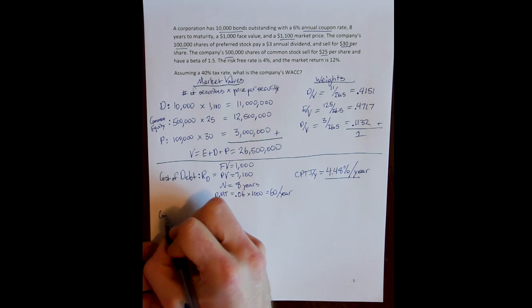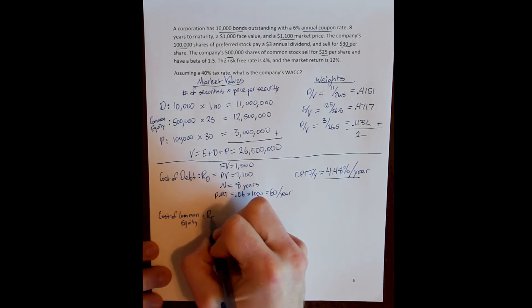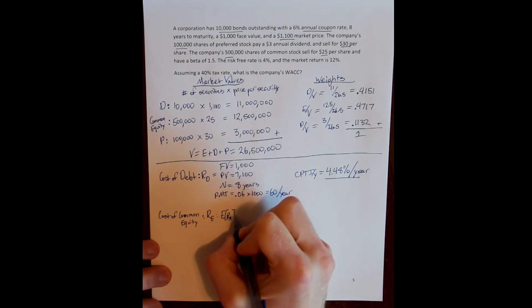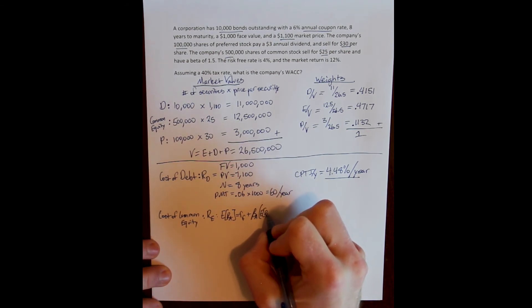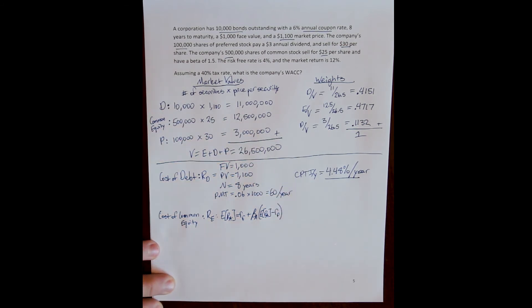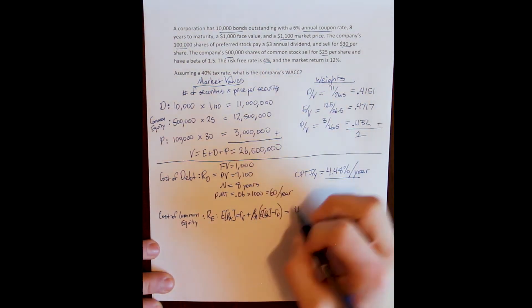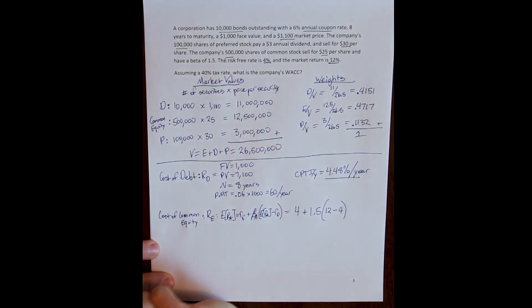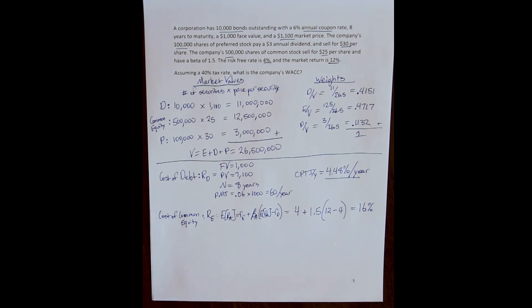Next, I'll solve for the cost of common equity, denoted RE. The cost of common equity is the expected return on the firm's stock. According to the Capital Asset Pricing Model, this equals the risk-free rate plus beta times the market risk premium — which is the expected market return minus the risk-free rate. The risk-free rate is 4%, beta is 1.5, and the market return is 12%, so the market risk premium is 8%. That gives us an expected return on common equity of 16%, which is our cost of equity.